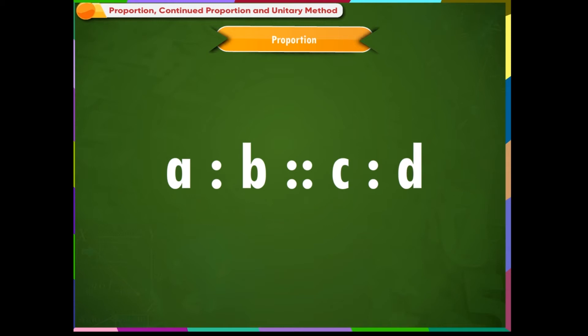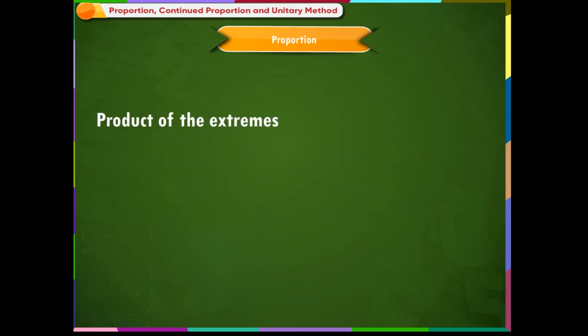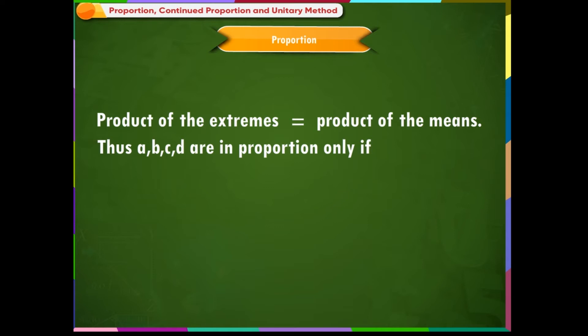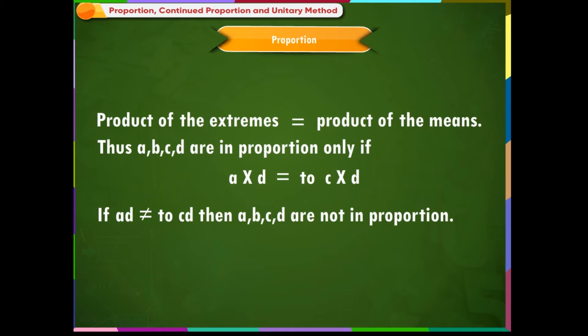It is very easy to verify whether ratios are in proportion using the formula: product of the extremes is equal to product of the means. Thus a, b, c, d are in proportion only if a × d is equal to c × b. If a × d is not equal to c × b, then a, b, c, d are not in proportion.